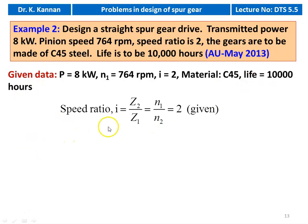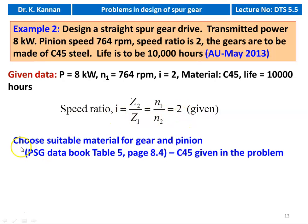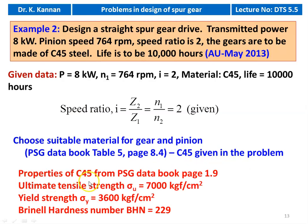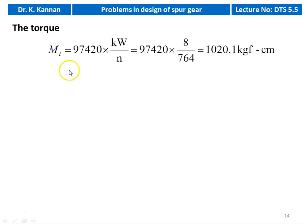Speed ratio i = 2. Choose the material — C45 is given. Properties of C45 from PSG Data Book page 1.9: ultimate tensile strength σu = 7,000 kgf/cm², yield strength σy = 3,600 kgf/cm², Brinell hardness number BHN = 229. Torque MT = 97,420 × P / N = 97,420 × 8 / 764 = 1,020.1 kgf·cm.